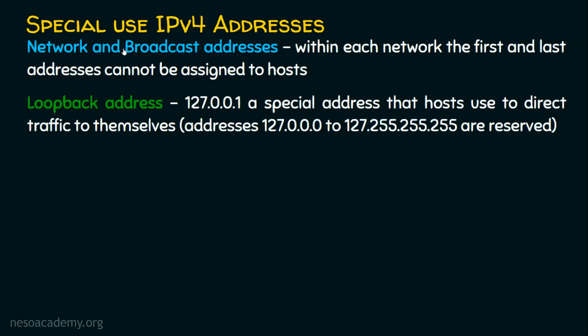The second special use IPv4 address is the loopback address, which is 127.0.0.1. It is a special address that hosts use to direct traffic to themselves. If you ping 127.0.0.1 on your computer, your host forwards the traffic to itself and you will normally get a reply. You can go and try ping 127.0.0.1 on your computer — you will normally get a reply because it directs the traffic to itself.